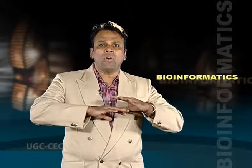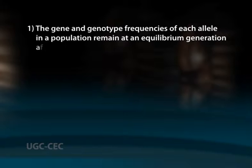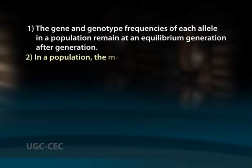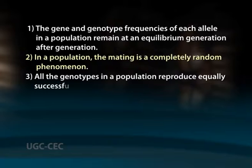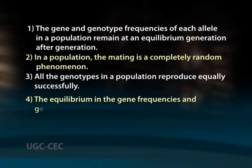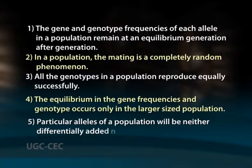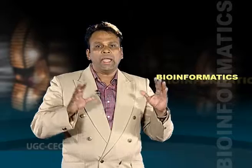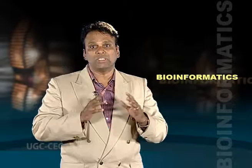In the absence of all evolutionary forces, the gene and genotype frequencies of each allele in a population remain at equilibrium generation after generation. In a population, mating is a completely random phenomenon. All genotypes in a population reproduce equally successfully. The equilibrium in gene frequencies and genotype frequencies occurs only in larger-sized populations. Particular alleles will be neither differentially added nor differentially subtracted from the population. An equilibrium is established between the frequencies of alleles, described by the mathematical relationship called the Hardy-Weinberg theorem, now known as Hardy-Weinberg law.